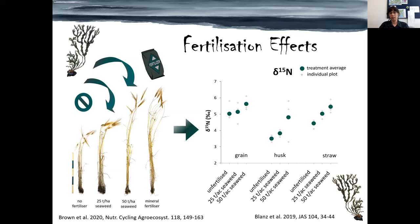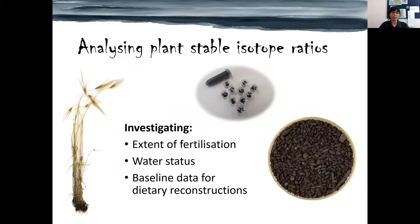This means we need to take seaweed fertilisation effects into account when interpreting data, for example, of humans that consumed barley. We can also analyse archaeological remains directly to investigate the extent of fertilisation — which could also come from animal dung — as well as water status, meaning how well-irrigated plants were. We also use this to get baseline data for dietary reconstructions.